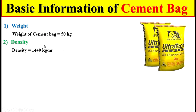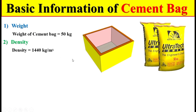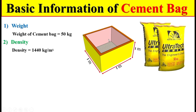For better understanding, let's look at the graphic representation of this theory. Suppose we have a box where the length is one meter, the width is one meter, and the height is also one meter. If we multiply these three sides, we get a total volume of one cubic meter.